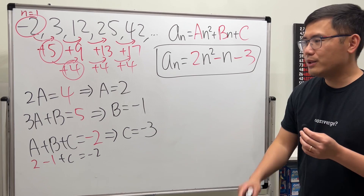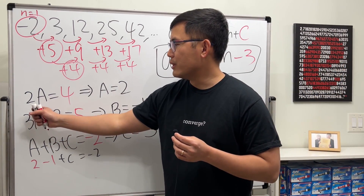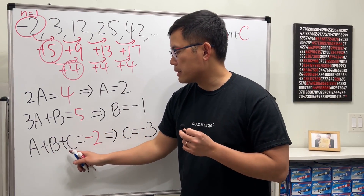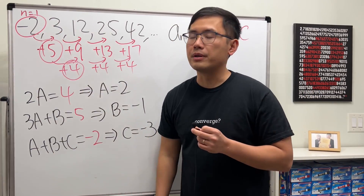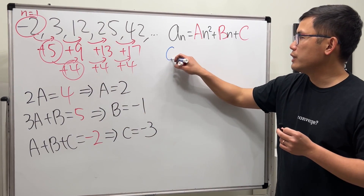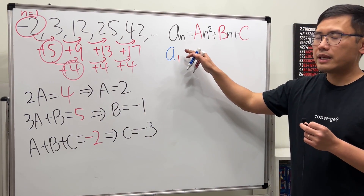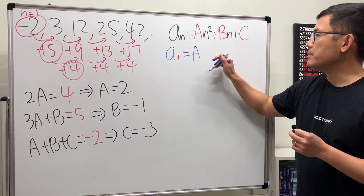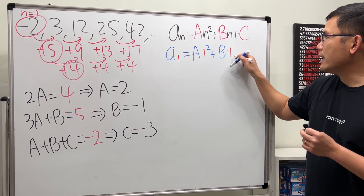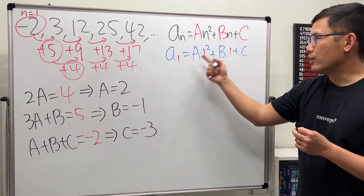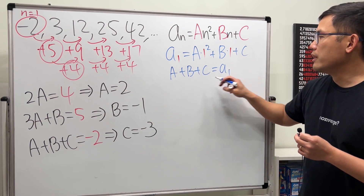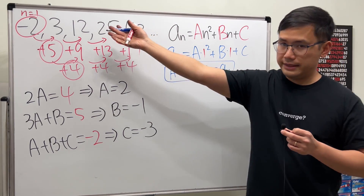Now I'd like to explain why we do each of these steps. First, why do we set a plus b plus c equal to the first term? Because n starts at one. If we look at a_1, we're plugging one into all the n's, giving us a times one squared plus b times one plus c, which is simply a plus b plus c — and that must equal the first term.